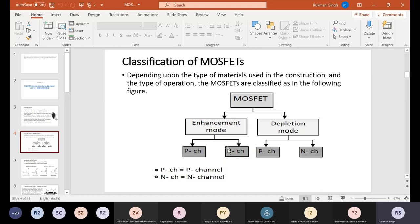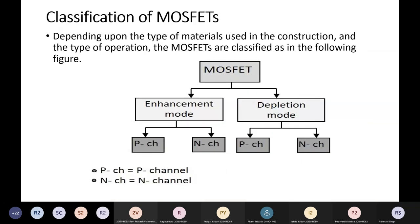So we have: P-channel enhancement mode MOSFET, N-channel enhancement mode MOSFET, P-channel depletion mode MOSFET, and N-channel depletion mode MOSFET. Always MOSFET can operate in two modes: enhancement mode or depletion mode. This classification is based on operation. But depending upon the construction material — what you are using for the channel — it can be P-type or N-type. So you can divide it into four types: P-channel enhancement mode, N-channel enhancement mode, P-channel depletion mode, and N-channel depletion mode.